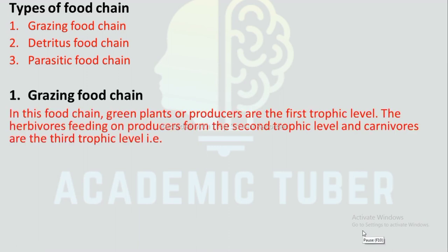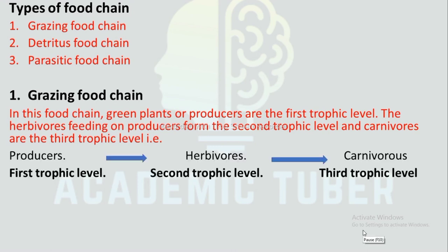Types of food chain — Grazing food chain: In this food chain, green plants or producers are the first trophic level. Herbivores feeding on producers form the second trophic level, and carnivores are the third trophic level. For example: grass (first trophic level) is eaten by deer (second trophic level), which is eaten by tiger (third trophic level).